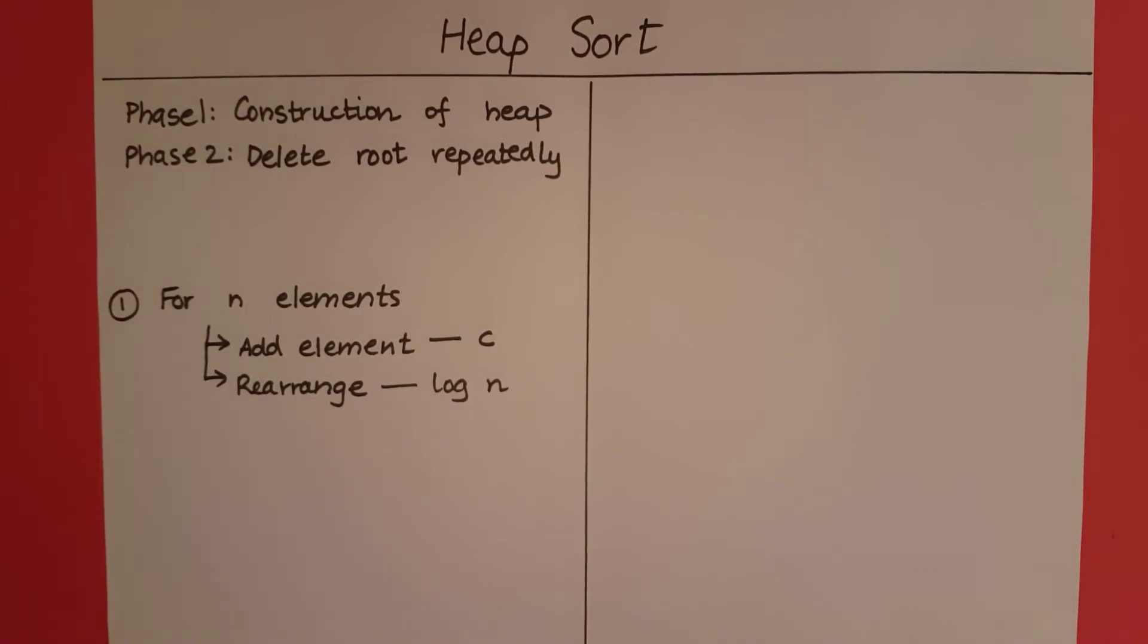So how many swaps will be there in the worst case? In the worst case the element will go all the way till the root. That is, it will go throughout the tree. So the number of swaps is going to be the number of levels in the tree, which is going to be log n.